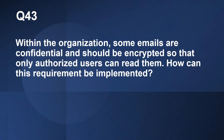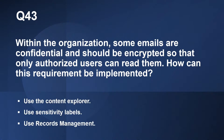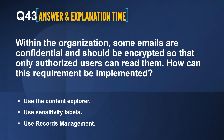Question number 43: Within the organization, some emails are confidential and shouldn't be encrypted so that only authorized users can read them. How can this requirement be implemented? The options are: use content explorer, use sensitivity labels, use records management. The correct answer is use sensitivity labels. Sensitivity labels help ensure that emails can only be decrypted by users authorized by the label's encryption settings.